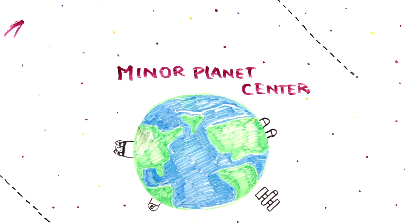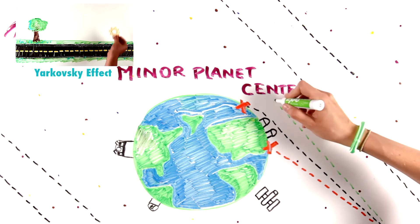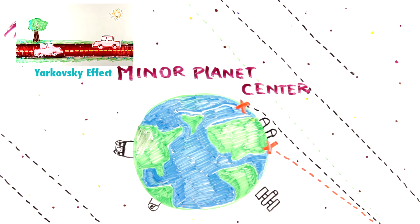The Minor Planet Center calculates the NEO's orbit far into the future and checks for any upcoming Earth encounters. Sometimes it's hard to tell whether an NEO will hit Earth or not, due to the tiny influence of the Yarkovsky effect, which can modify the NEO's orbit.